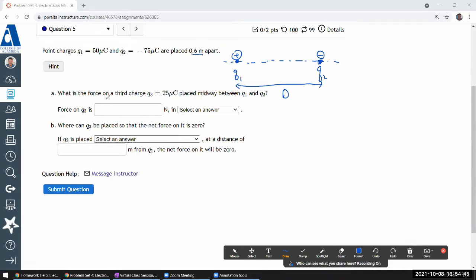What is the force on a third charge placed midway between Q1 and Q2? I have Q3 here, and it's at a distance of D over 2 away from both charges. The answer force on Q3 is, oh, this is probably the place where it's good to draw a free body diagram.